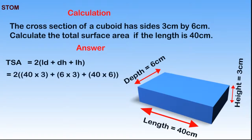Putting in the figures, we will have 2 into brackets: length which is 40cm multiplied by depth which is 6cm, plus our depth which is 6cm multiplied by 3cm which is our height, plus our length again which is 40cm multiplied by 6cm.